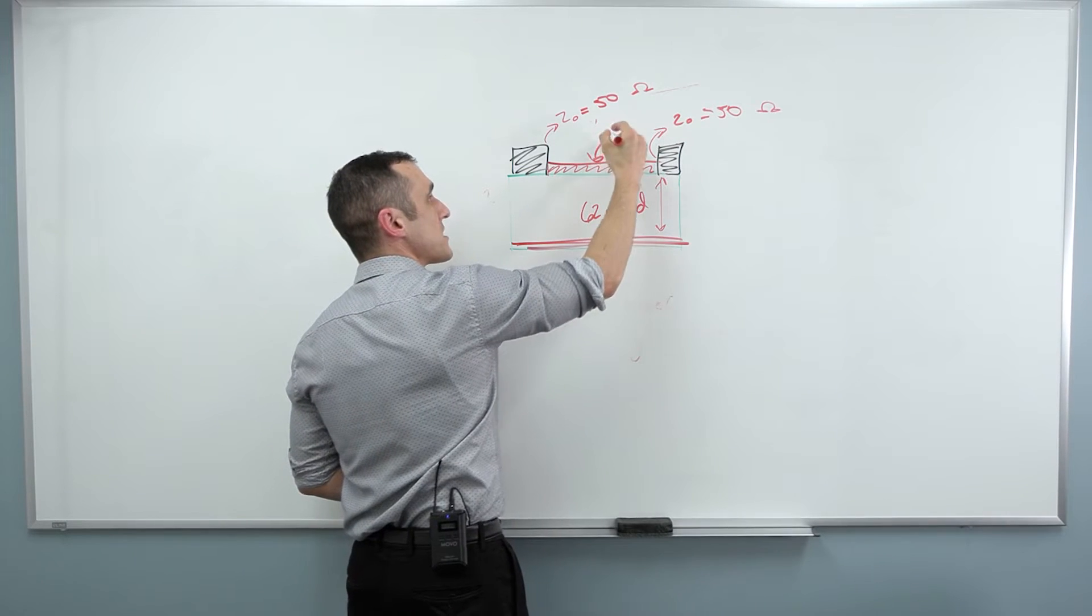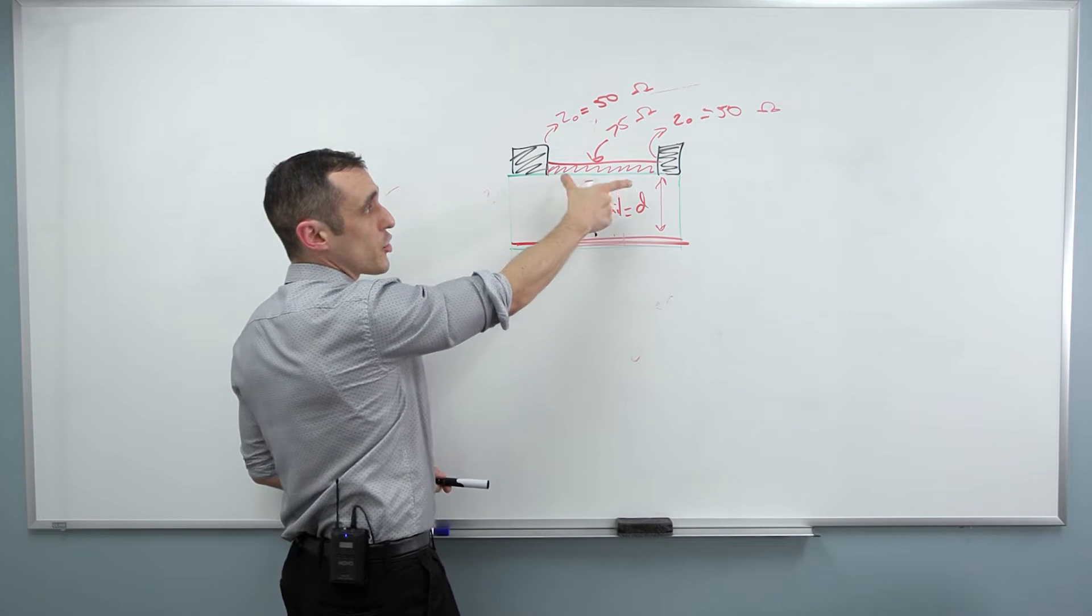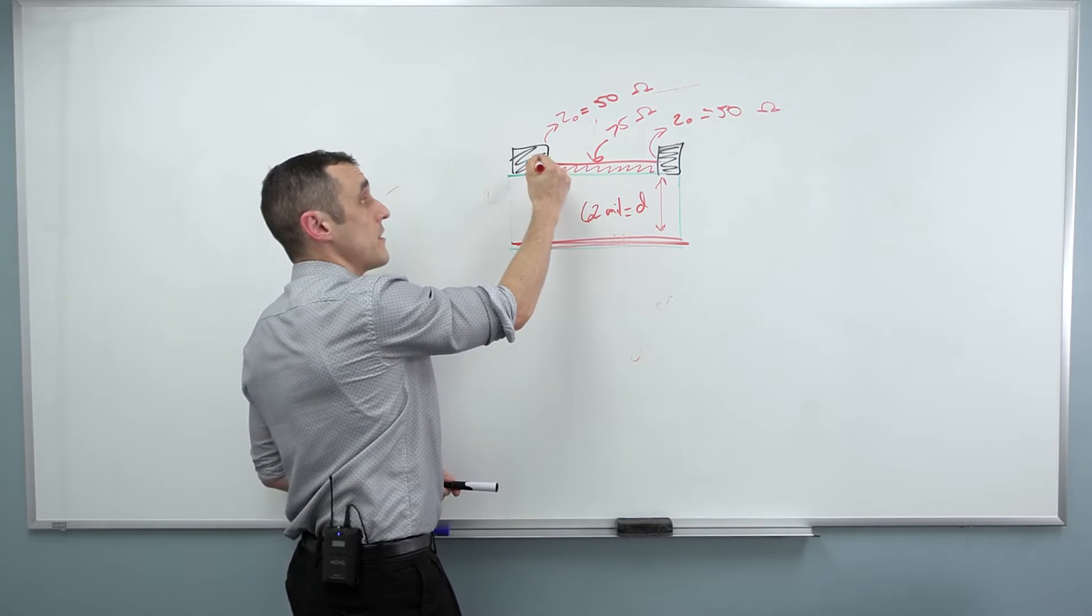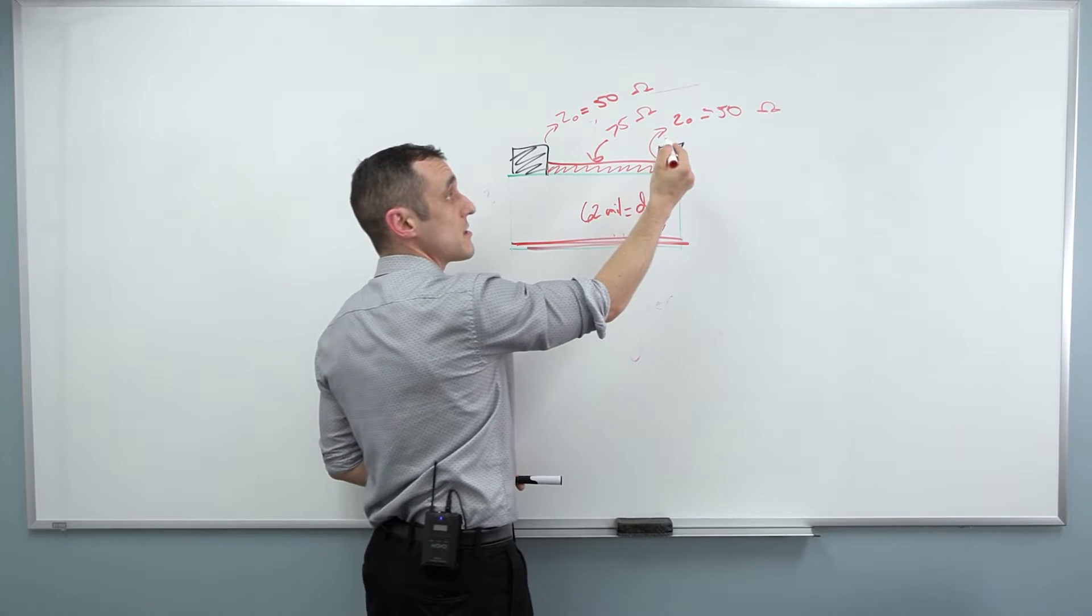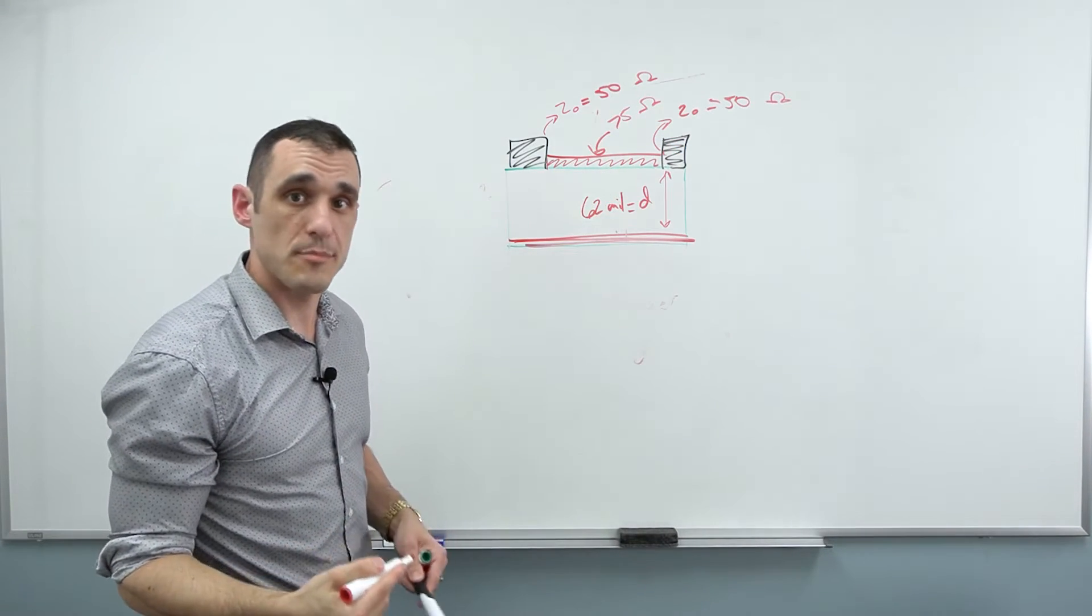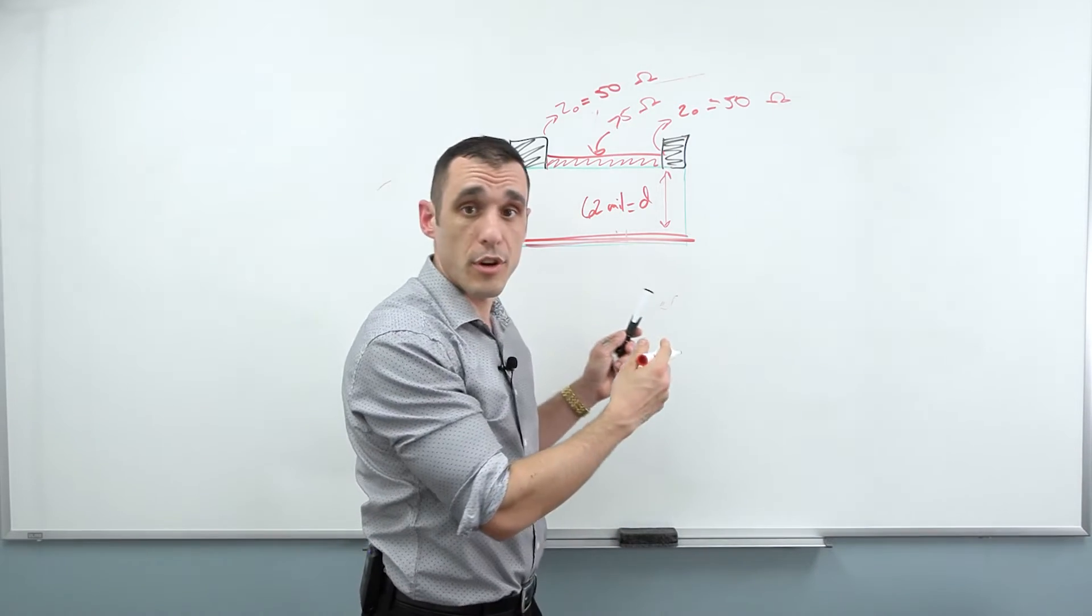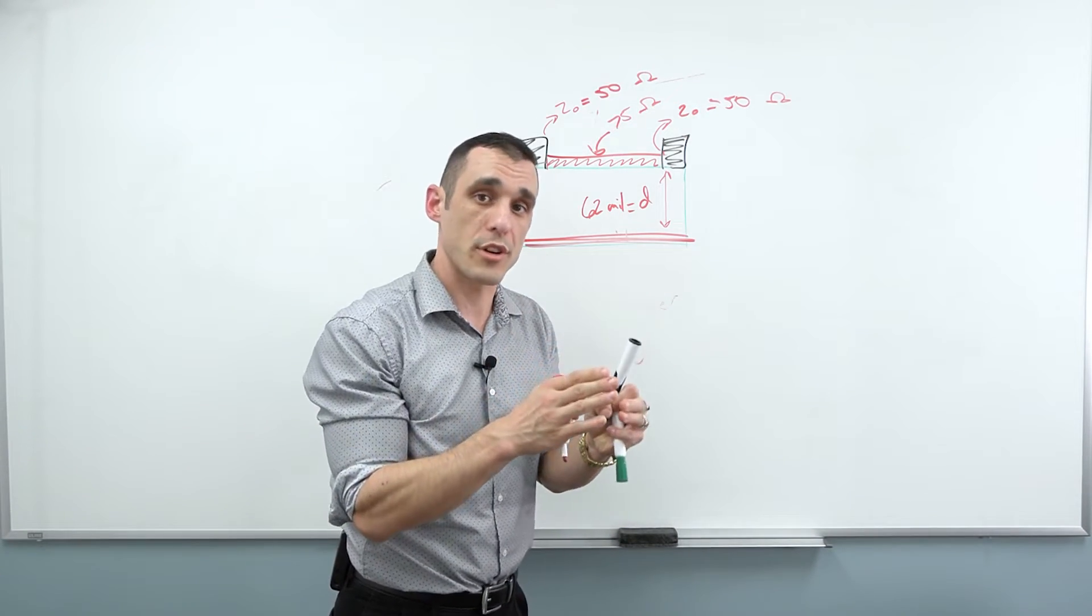This might expect a Z sub zero of 50 ohms. And what if this is something like 75 ohms? Well, if this trace is short enough, this component is only going to see the impedance at the input of this component.